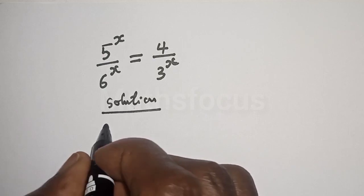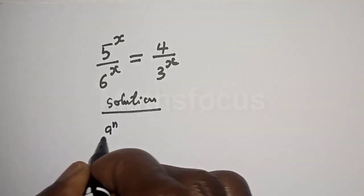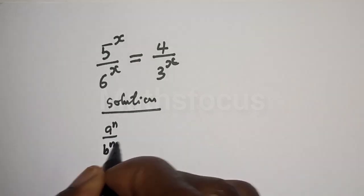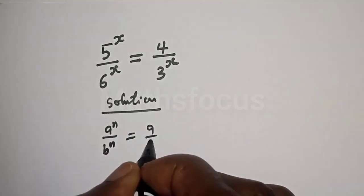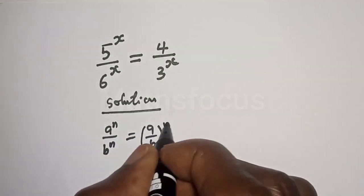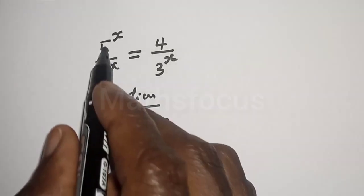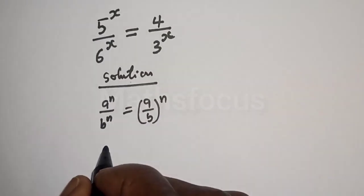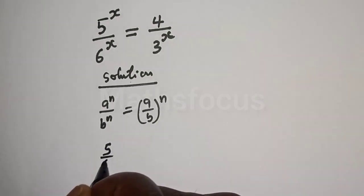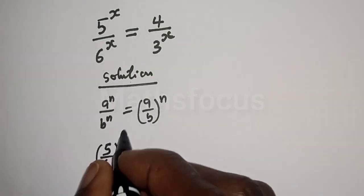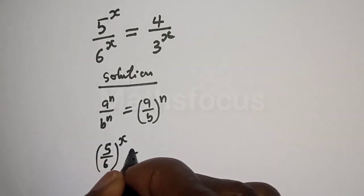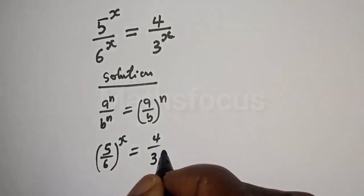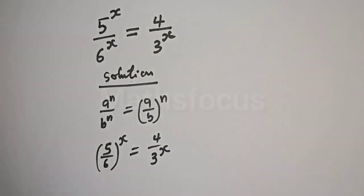Remember this exponential rule: if you have a raised to power n over b raised to power n, this is equal to a over b all raised to power n. So 5 raised to power x divided by 6 raised to power x can be written as 5 over 6 raised to power x, which is equal to 4 over 3 raised to power x.